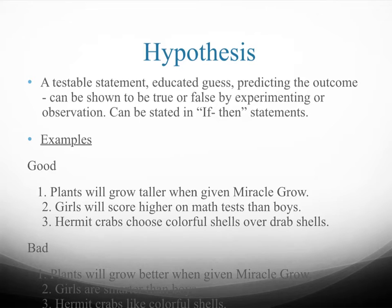Here we see examples of hypotheses labeled as good and bad. The first good hypothesis: plants will grow taller when given Miracle Grow. The first bad hypothesis: plants will grow better when given Miracle Grow. The reason that's a bad hypothesis is because it's not clear what you mean by 'better' — you might mean grow taller, bear more fruit, or be more attractive. It's not well defined. A good hypothesis is very specific about what you can measure.